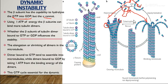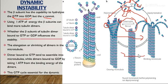Two important terms to learn here are catastrophe and rescue. Catastrophe means the switch from growth to shrinking. Rescue is the opposite event: GTP-bound tubulin can begin adding to the tip of the microtubule again, providing a new cap known as the GTP cap, protecting the microtubule from further shrinking.